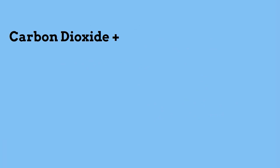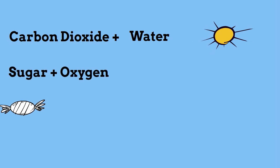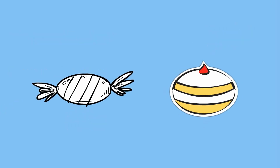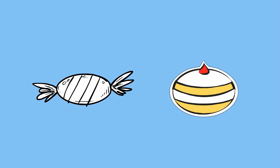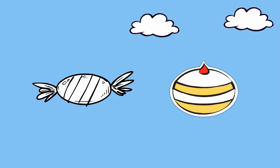Photosynthesis occurs at the chloroplasts. Plants take carbon dioxide plus water with energy from the sun or light, and in a chemical reaction — kind of like an explosion — create sugar and oxygen. The oxygen is released into the atmosphere.